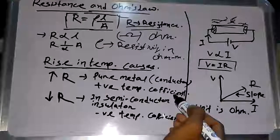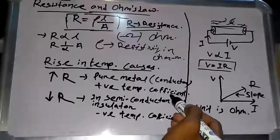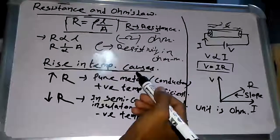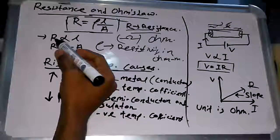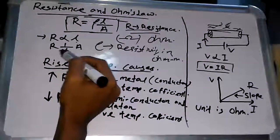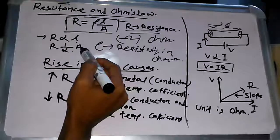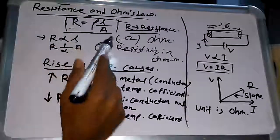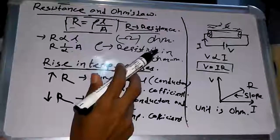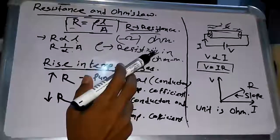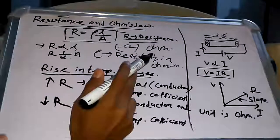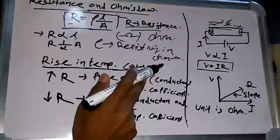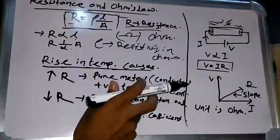Resistance depends upon several factors. It is directly proportional to the length of the conductor L, and inversely proportional to the cross-sectional area A of the conductor. It also depends upon the nature of the material and the temperature of the conductor.